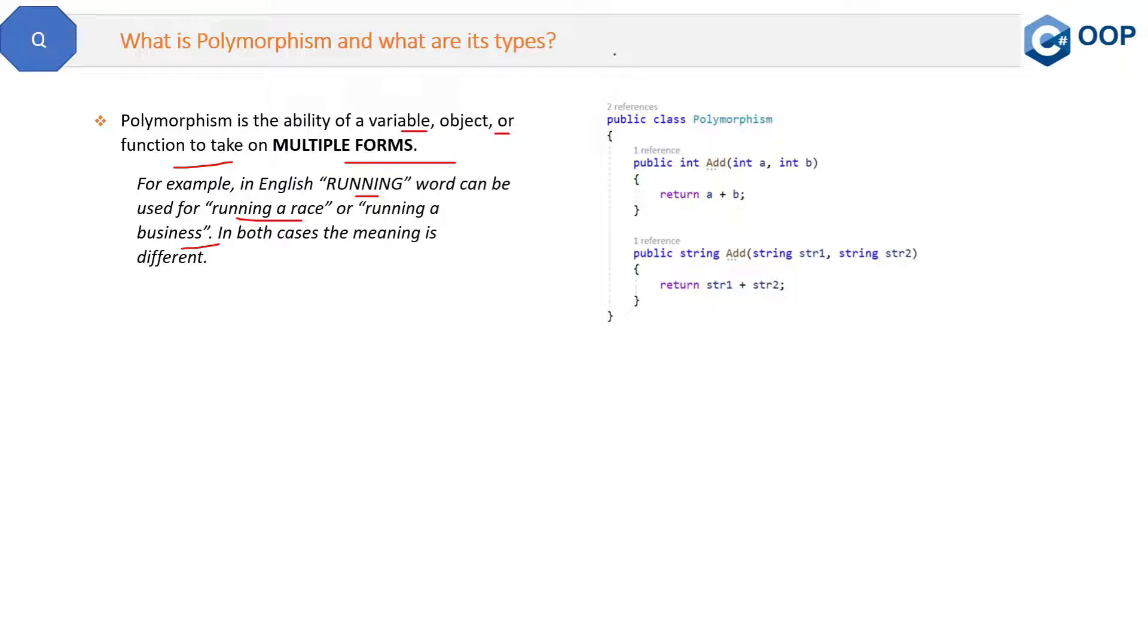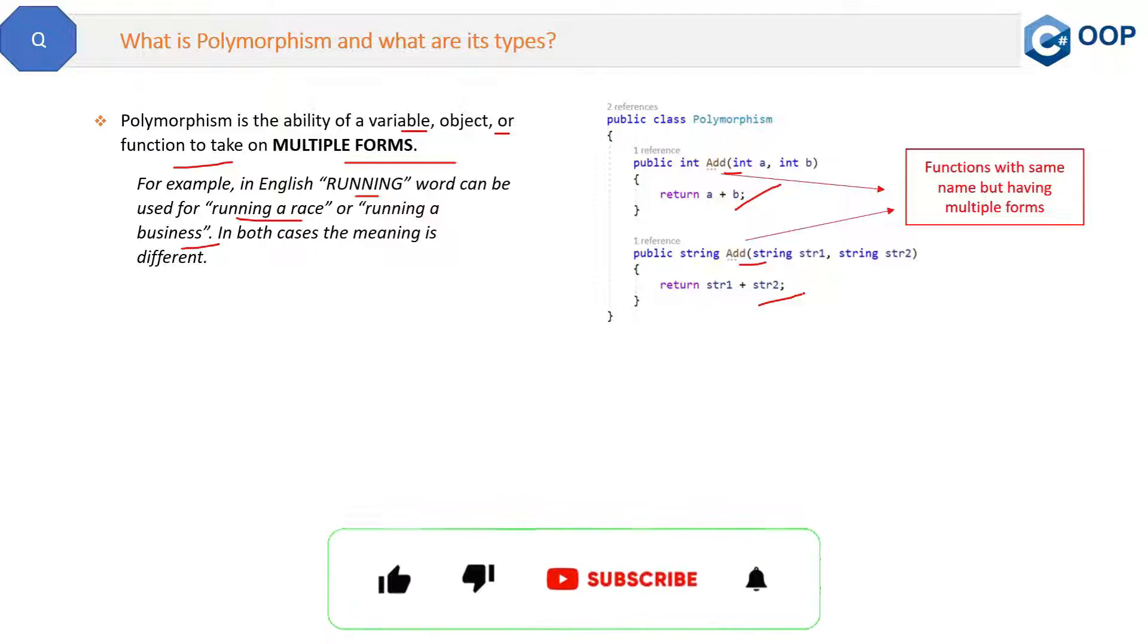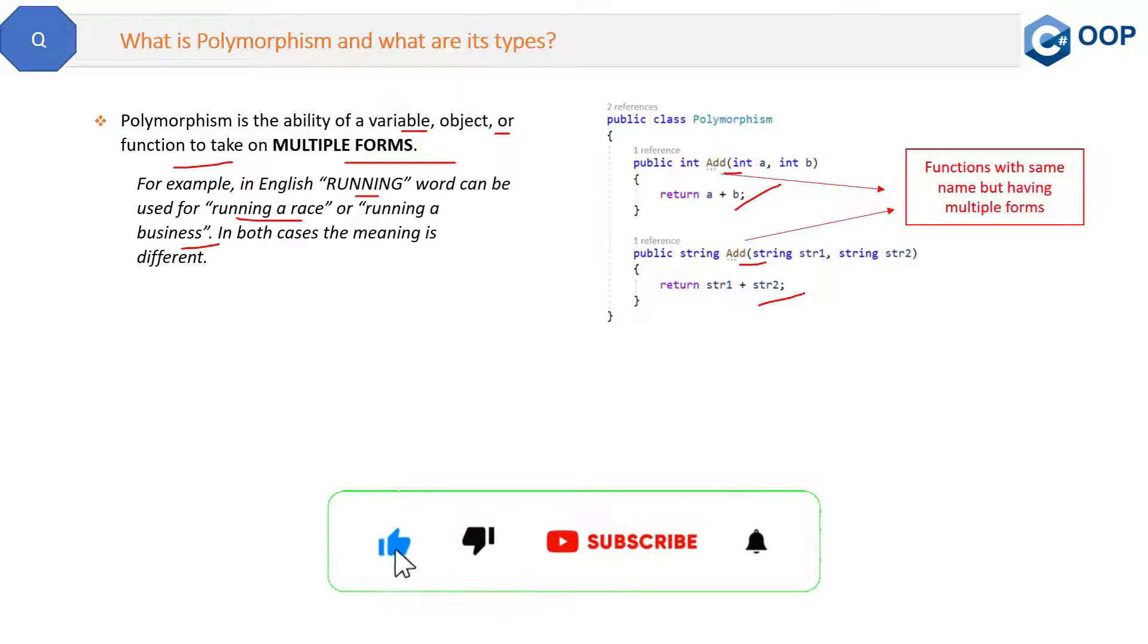Let's see the code example. Here you can see we have two functions with the same name 'Add' but having multiple forms. How? Because one is adding two integers and another one is adding two strings. So functions with same name but having multiple forms is polymorphism, and this type of polymorphism is called method overloading because we are overloading the method here.